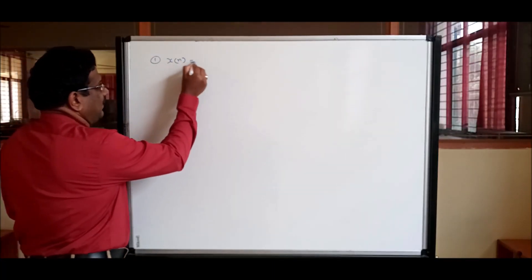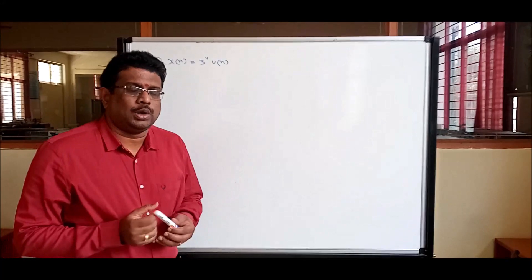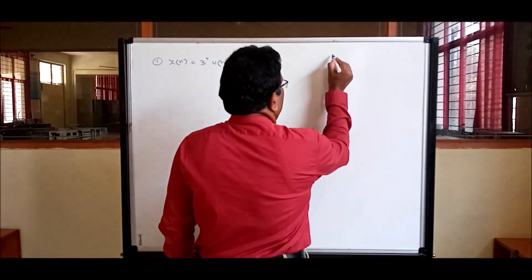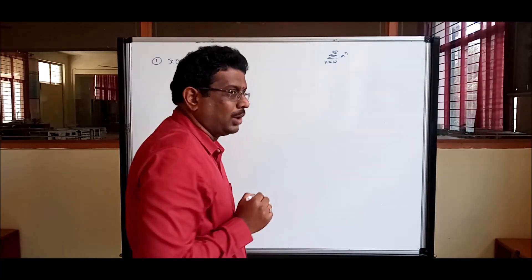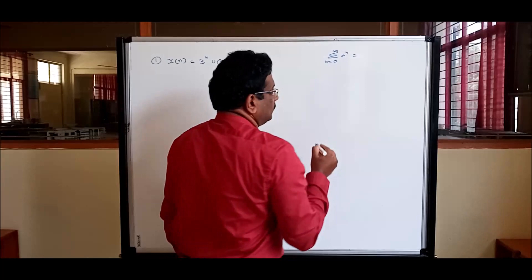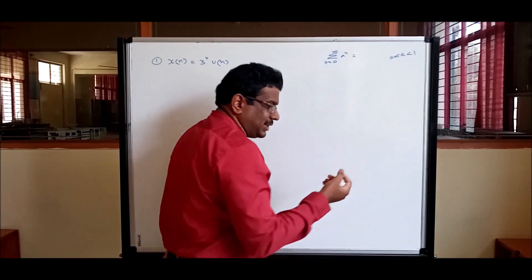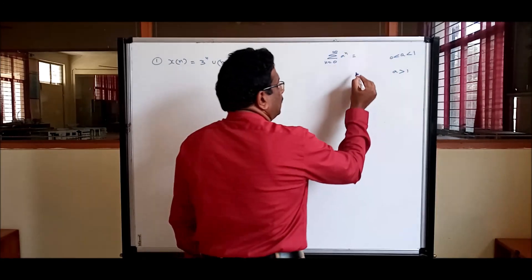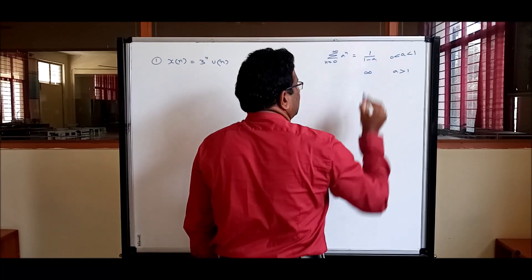Let us find the Z-transform for the given signal 3^n · u[n]. Before starting this problem, we will recall one basic mathematical formula: summation from n=0 to infinity of a^n. It has two answers depending on the value of a. If a is less than 1 and greater than 0, it is a fraction like 0.5 or 0.2. If a is greater than 1, the answer is different.